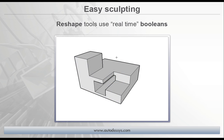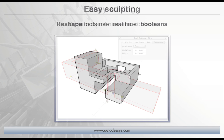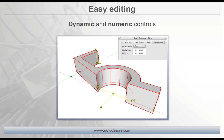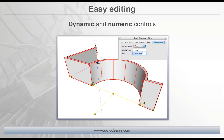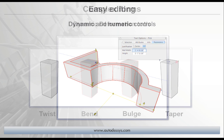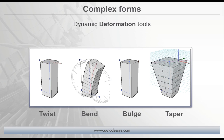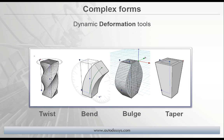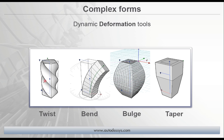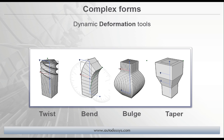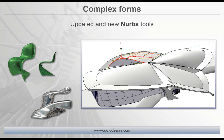I would like to stress that reshaping is done with real-time Boolean operations, resulting in good, clean, solid geometry that can be used further down the production pipeline. Dynamic and numeric input has also been enhanced to offer easier and more direct access to the control parameters of your objects. Even the deformation tools have been updated to the new interface, allowing you to directly manipulate objects in the modeling window with real-time visual feedback. All the NURBS tools have been updated, and there are also brand new NURBS tools, making creating complex forms easier and more intuitive than ever before.